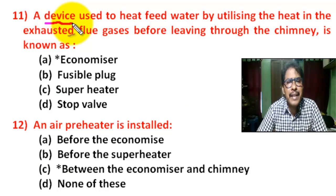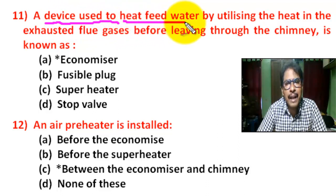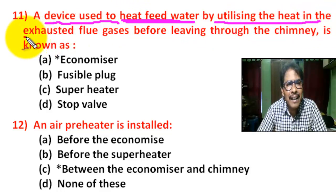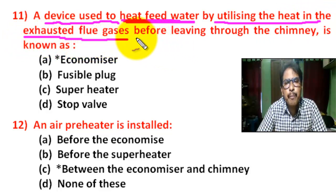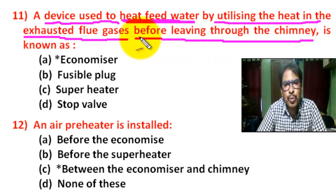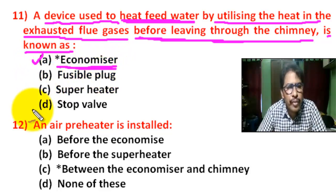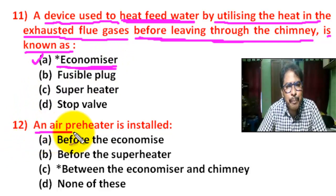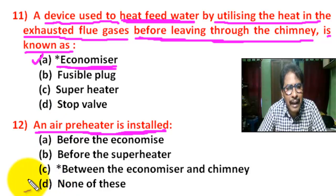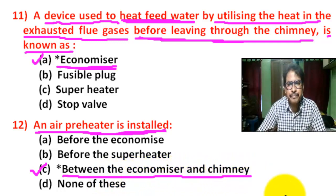Question number 11: A device used to heat feed water by utilizing the heat in the exhausted flue gases before leaving to the chimney is known as — there are four options. Correct answer is A: economizer. Question number 12: An air preheater is installed — there are four options. Correct answer is C: between the economizer and chimney.